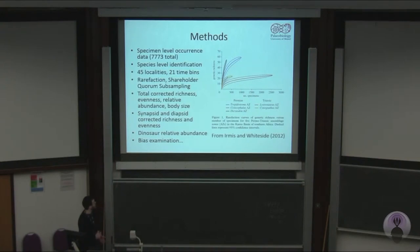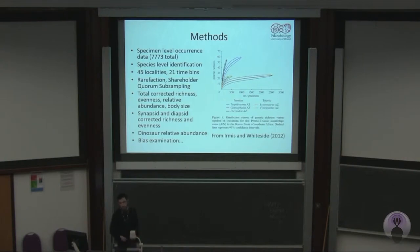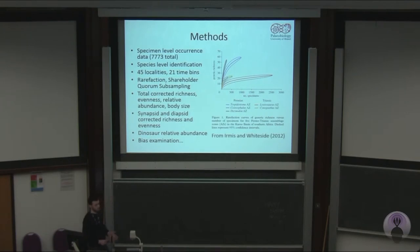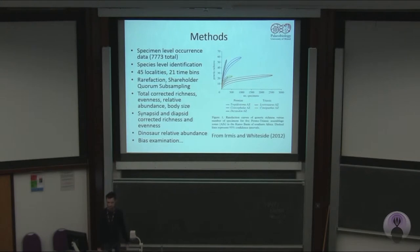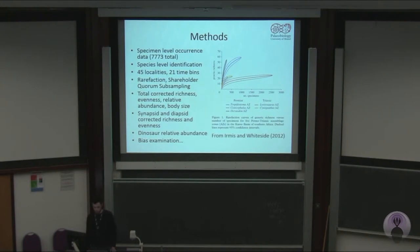We used two different methods to address this. First, rarefaction — you might collect 2,500 specimens with 22 genera from the Lystrosaurus zone, but rarefaction lets you construct a curve and estimate richness at any given sample size. By doing this, you can compare all formations at a standardised specimen count, say 100 specimens. We also used SQS. Other ecosystem health metrics included evenness, Simpson's diversity index, relative abundance of major groups, and body size. We specifically looked at synapsid and diapsid corrected richness through time, and dinosaur relative abundance.